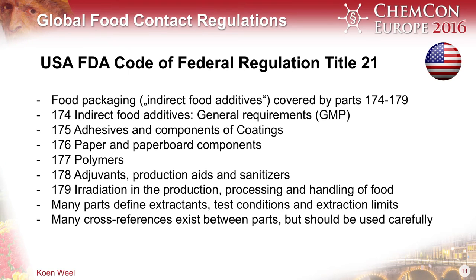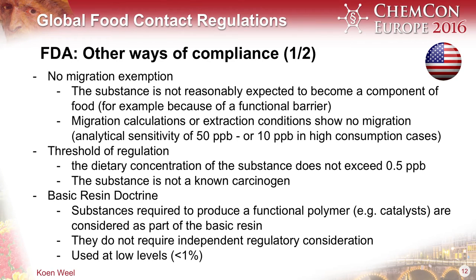Now we're moving over to the United States situation. Title 21 of the Code of Federal Regulations is dedicated to food and drugs, and within this title, there are Parts 174 to 179 that deal with food packaging. Part 174 is like a framework which lays down basic rules like GMP. Then there are the following chapters — 175 about adhesives and coatings. All the requirements in terms of extraction limits and extractants or simulants that you need to use for specific materials are scattered through this whole amount of text, and you have to look into each individual section or part to see what tests you need.